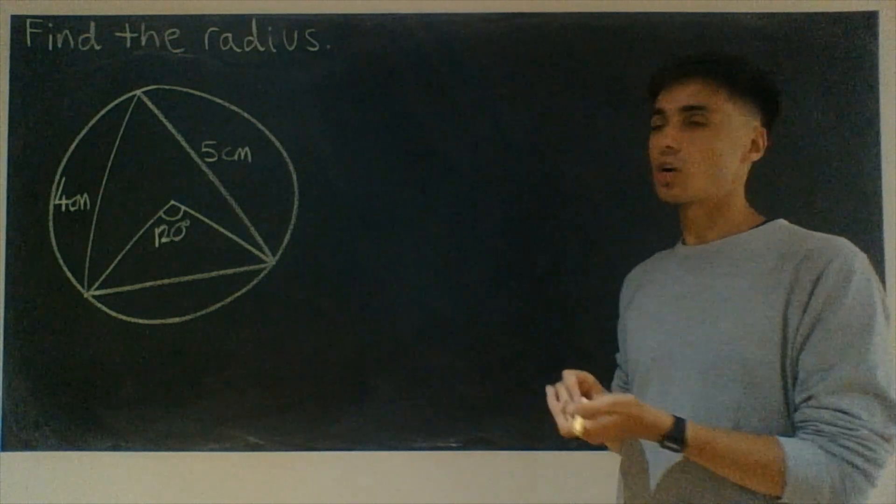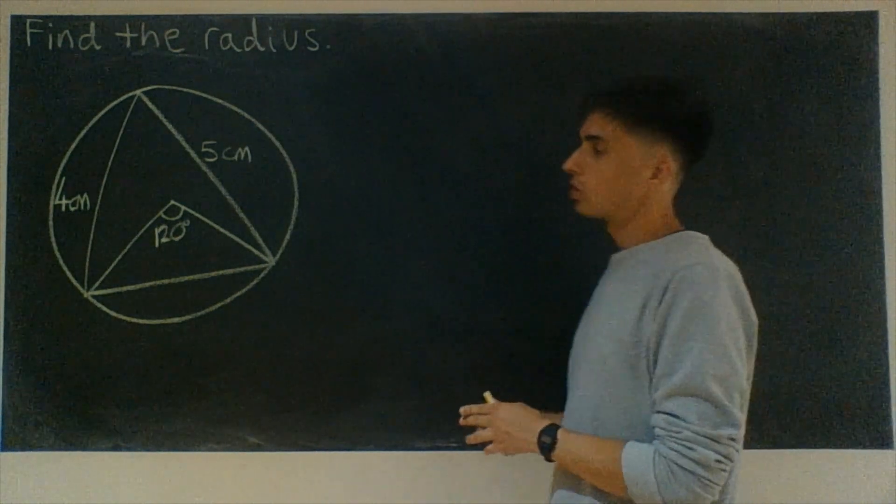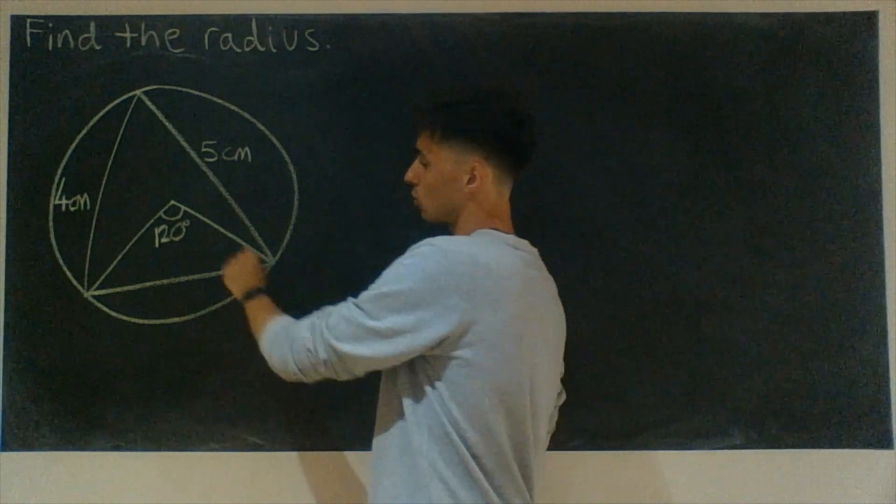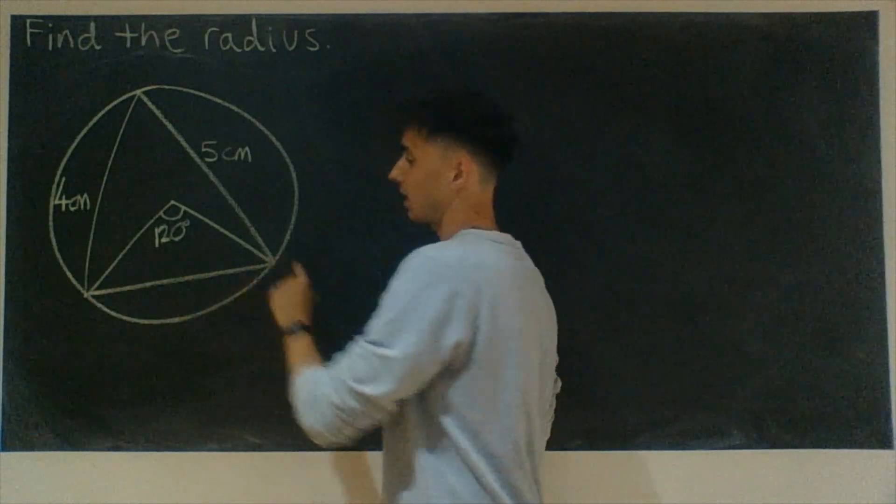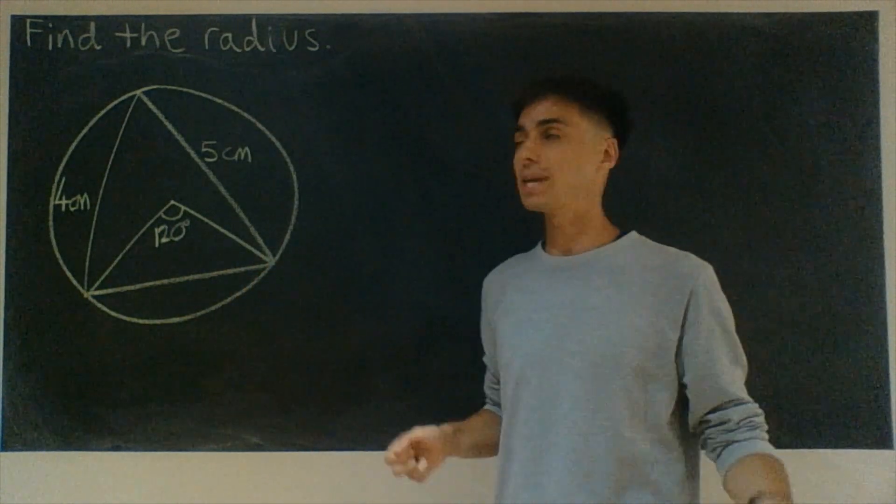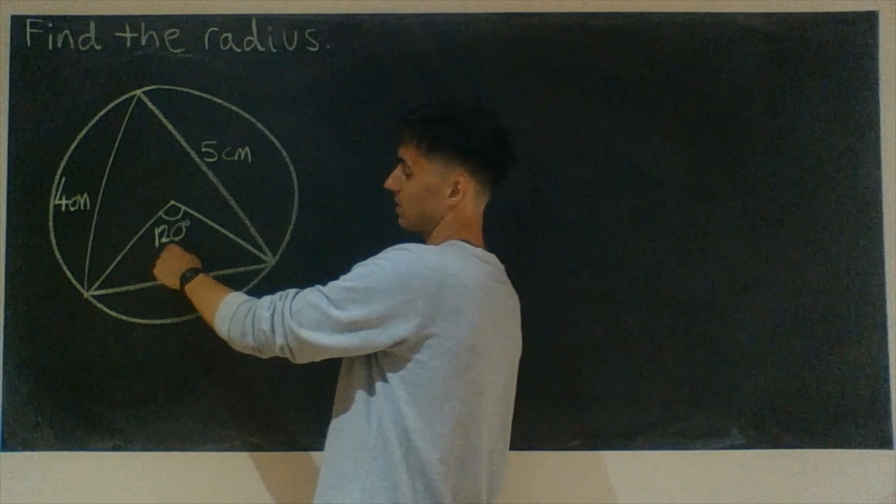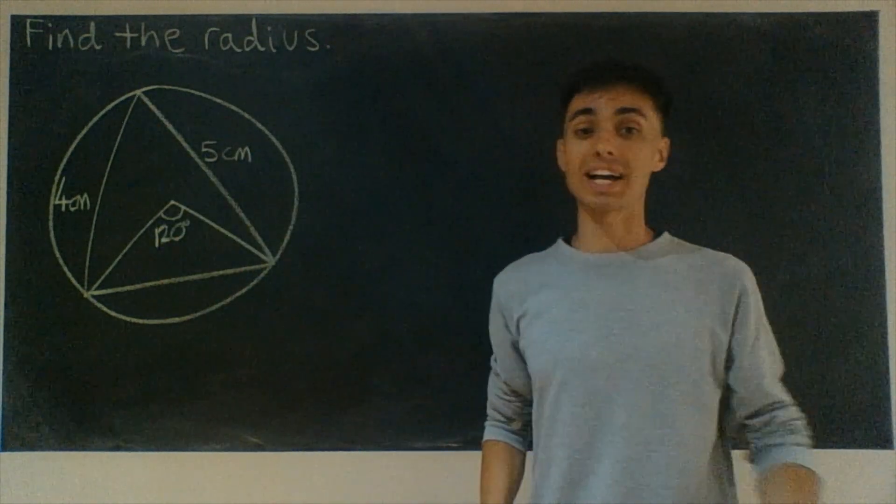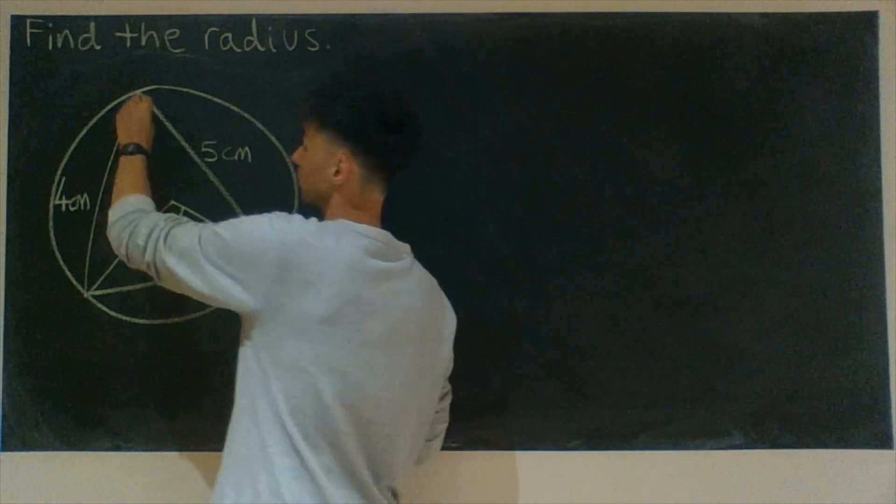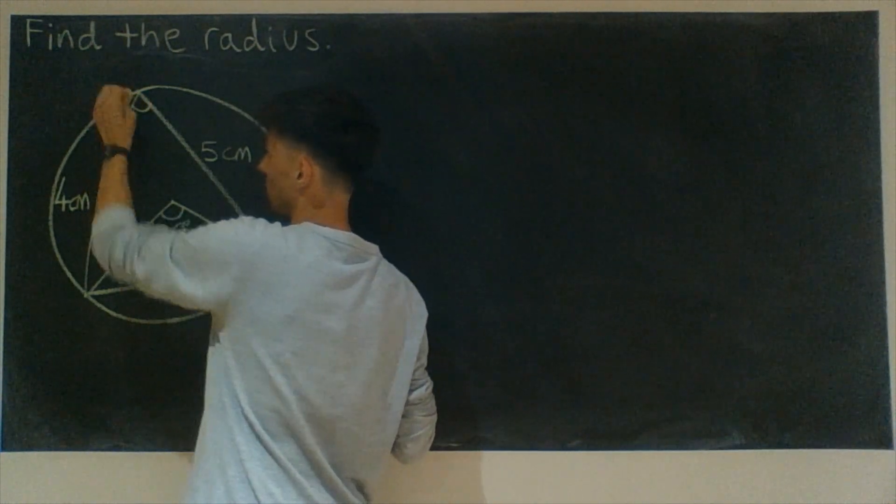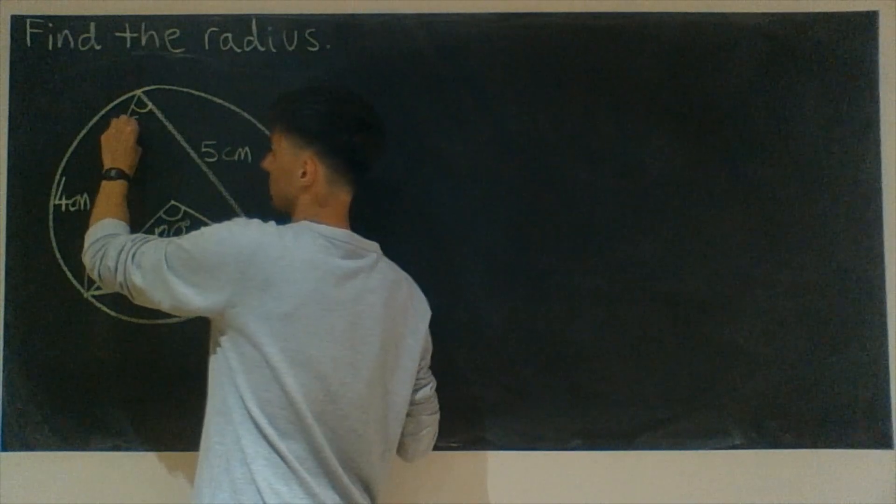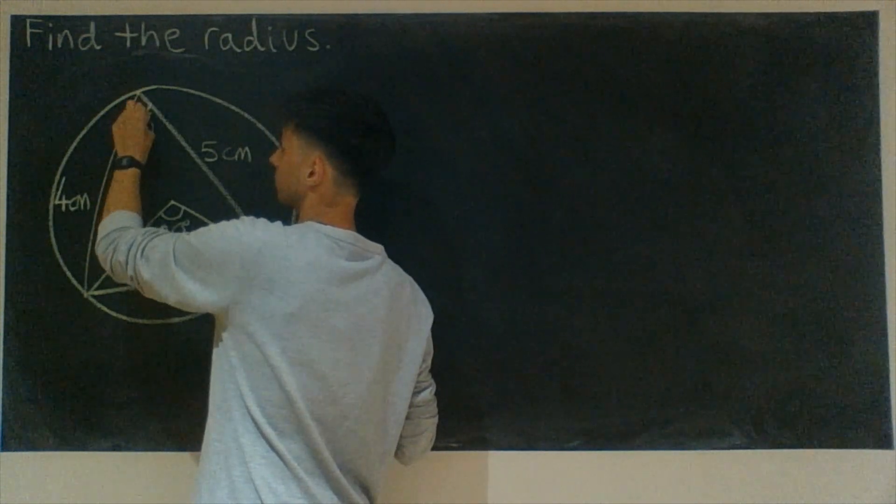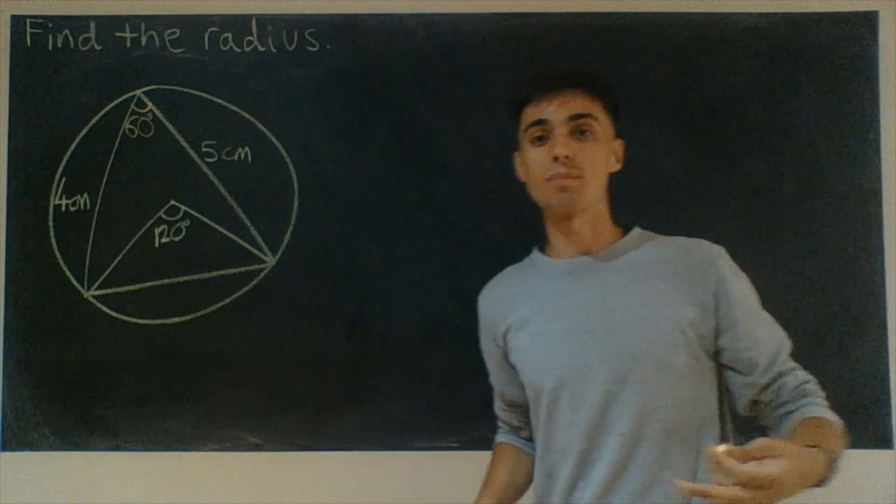Let's start off then with circle theorems. If you have a look, we've got two triangles that are subtended by the same chord. That means if this angle is 120 at the centre, the angle at the circumference has to be half of that angle. So this angle up here must be 60 degrees. That's a circle theorem that we know.